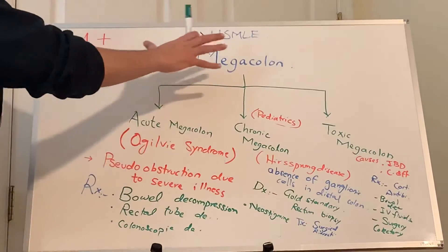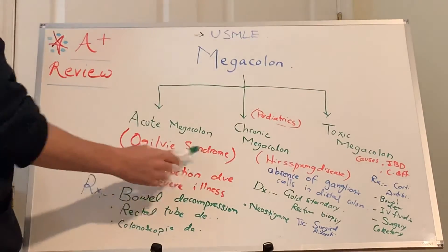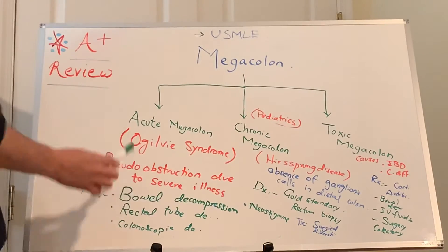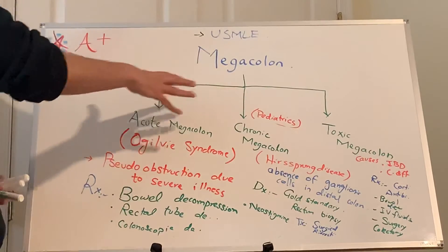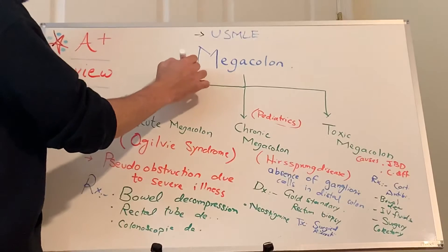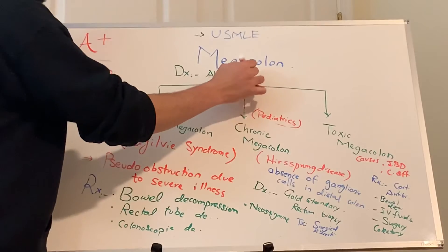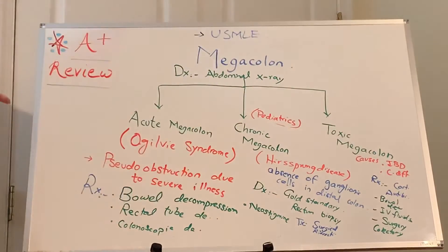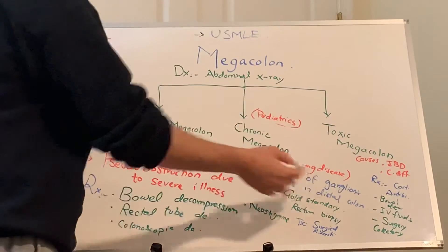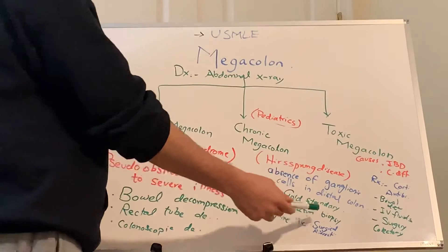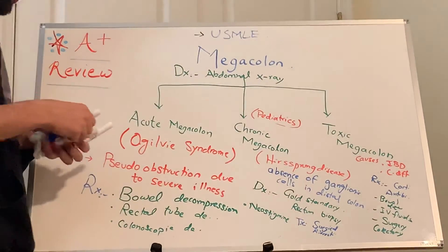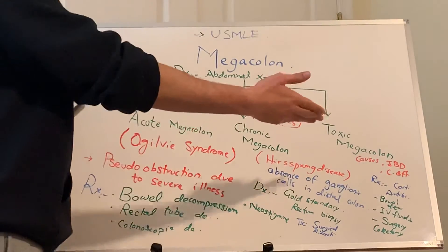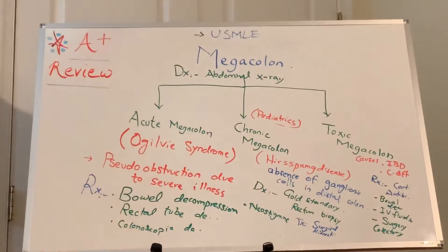So this is the best way to know about megacolon. To repeat: acute megacolon is Ogilvie syndrome — pseudo-obstruction due to severe illness, patient is in the ICU or severely sick, and suddenly starts having abdominal distension. Diagnose with abdominal X-ray. Chronic megacolon — the case will be pediatric Hirschsprung disease, absence of ganglionic cells in the distal colon; diagnose with rectal biopsy, treat with surgical resection. Toxic megacolon is non-obstructive toxic colitis secondary to IBD or C. diff — treat the cause.